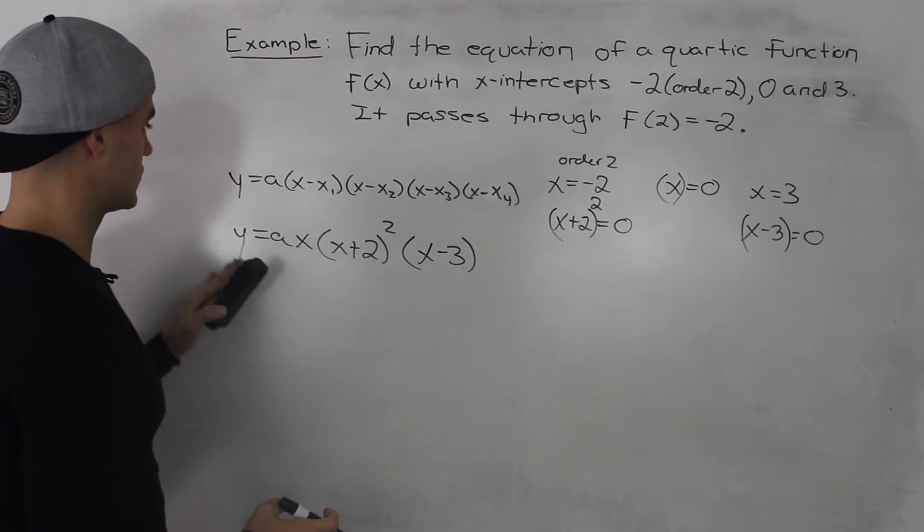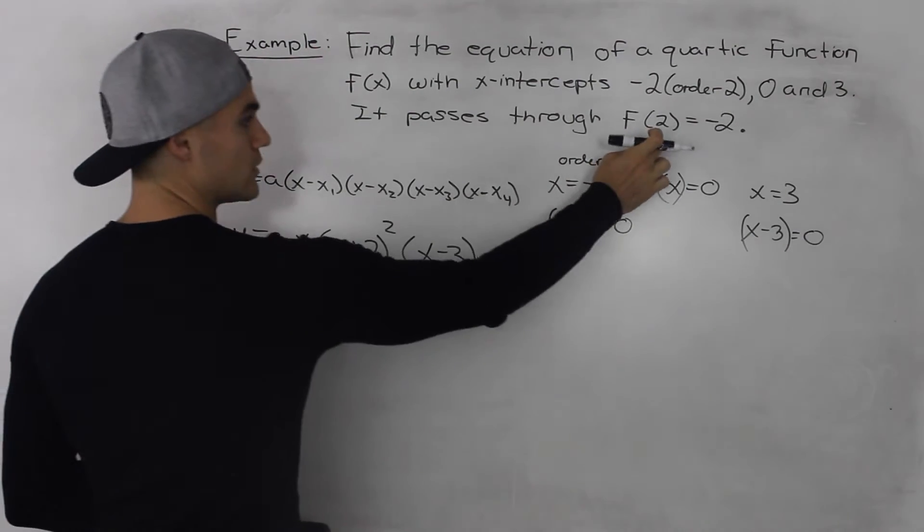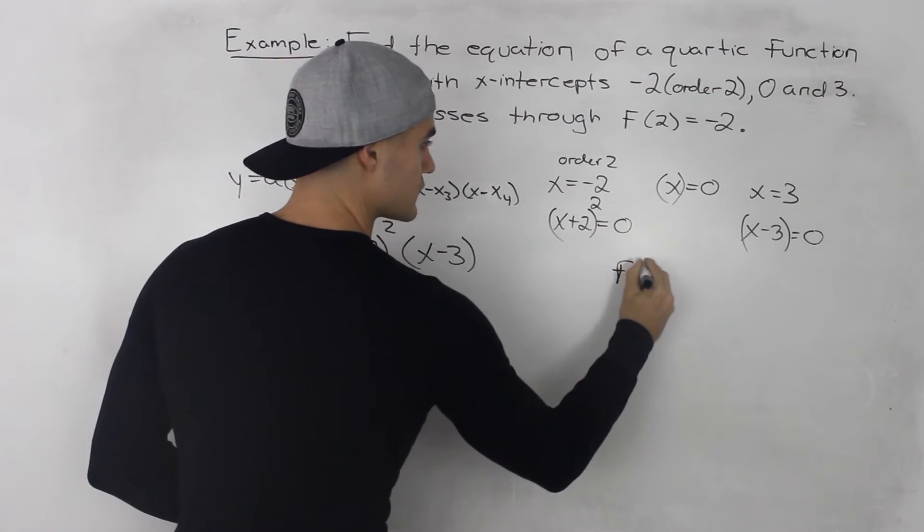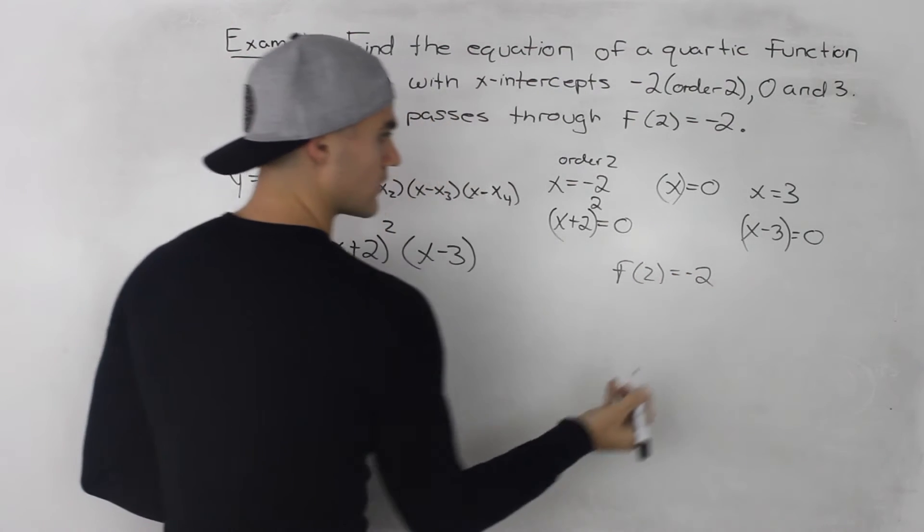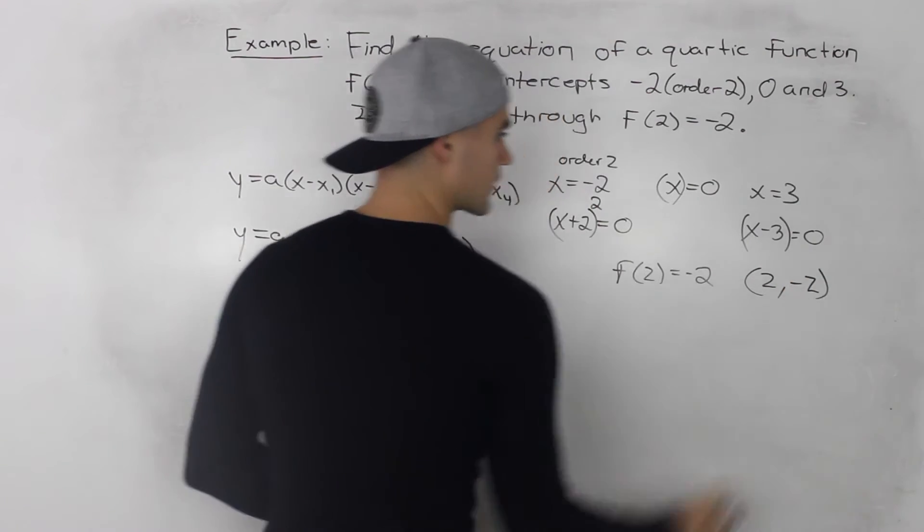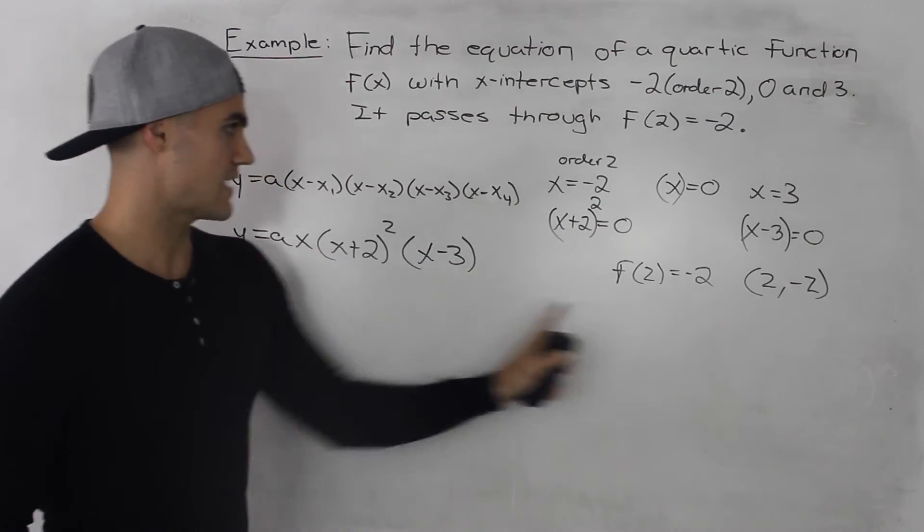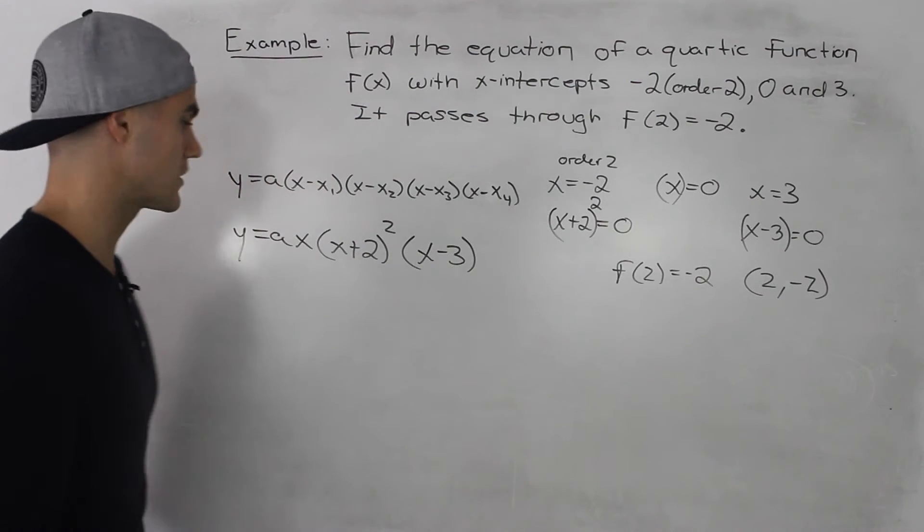So now what we have to do is we have to figure out what this a value would be, and we do that by using this point. So if f(2) = -2, well that's the same as the coordinate (2, -2). So let's plug in 2 for all the x's, and then -2 for the y, and then we can solve for a.